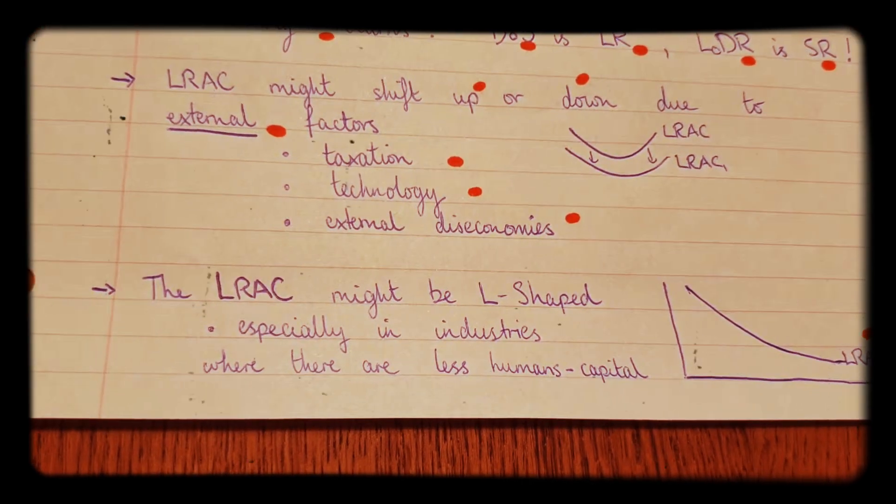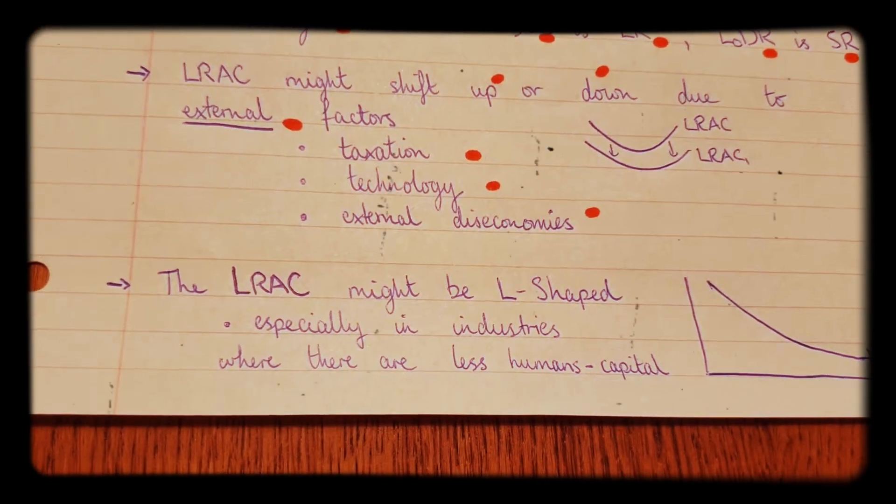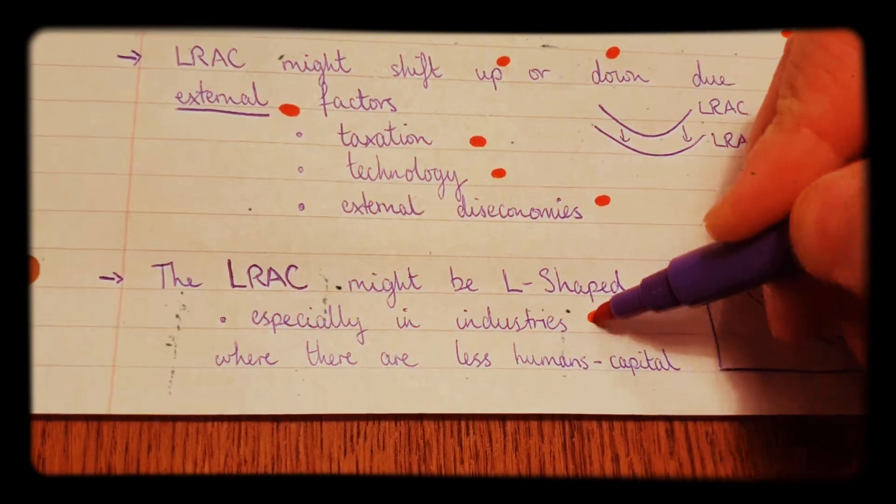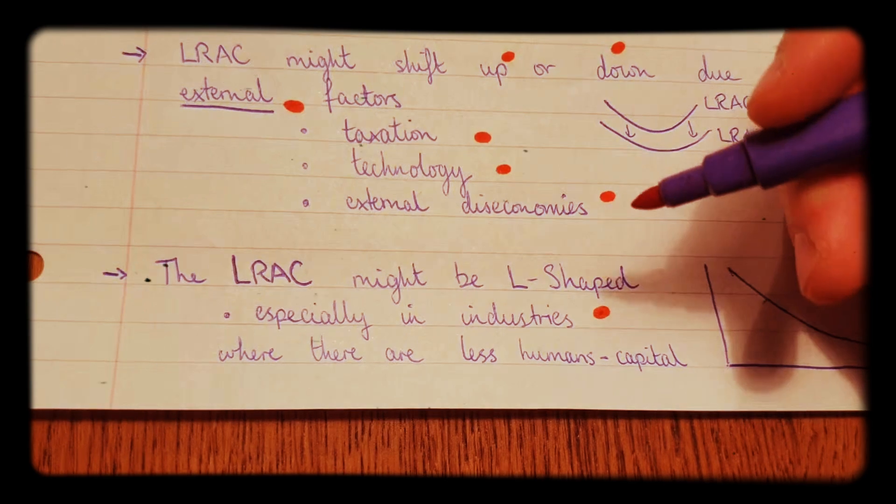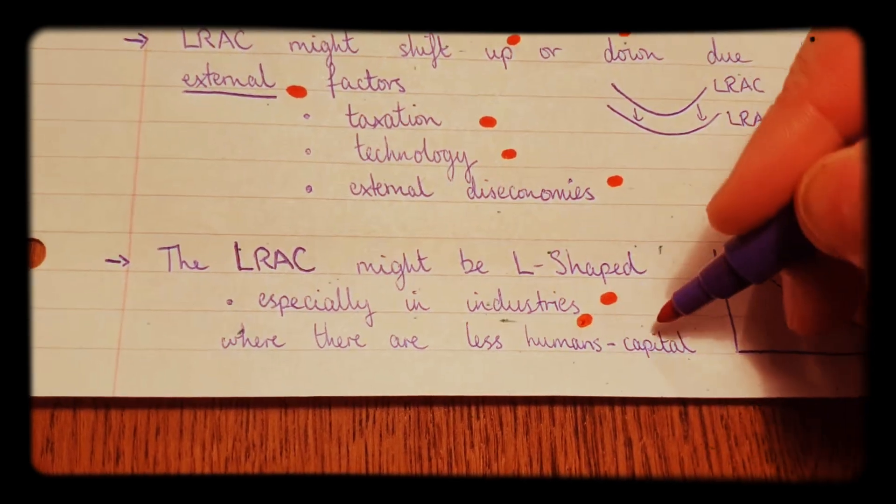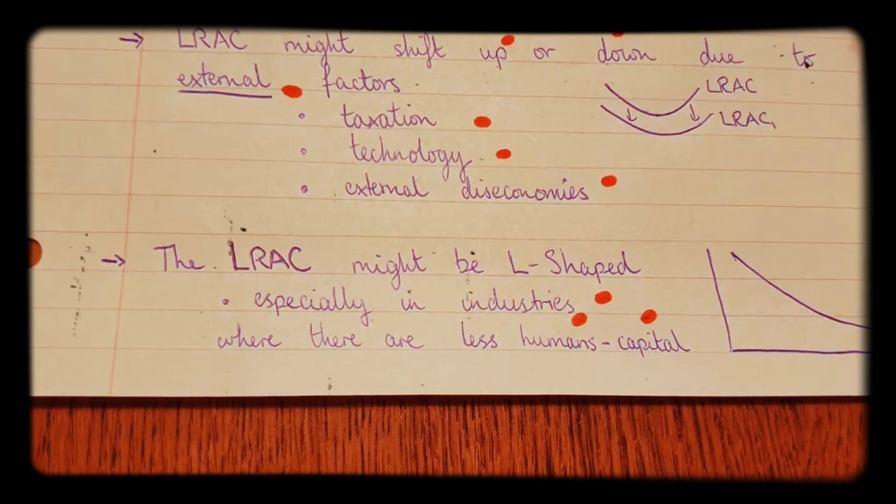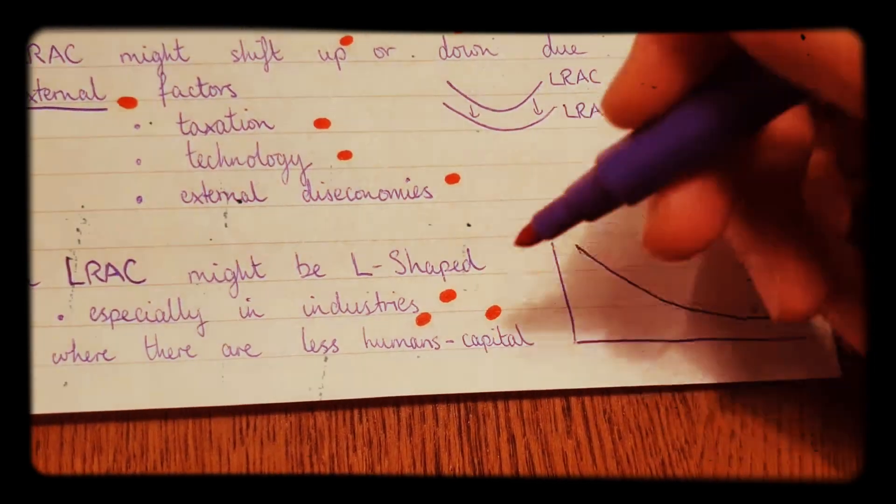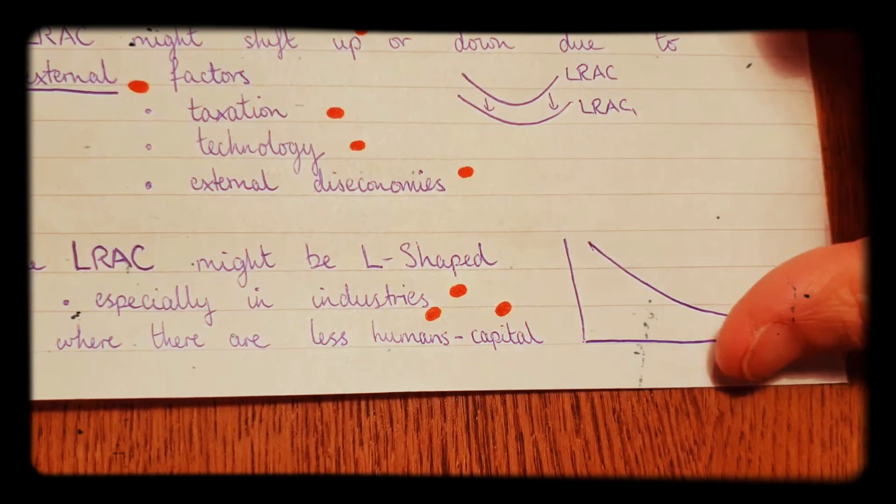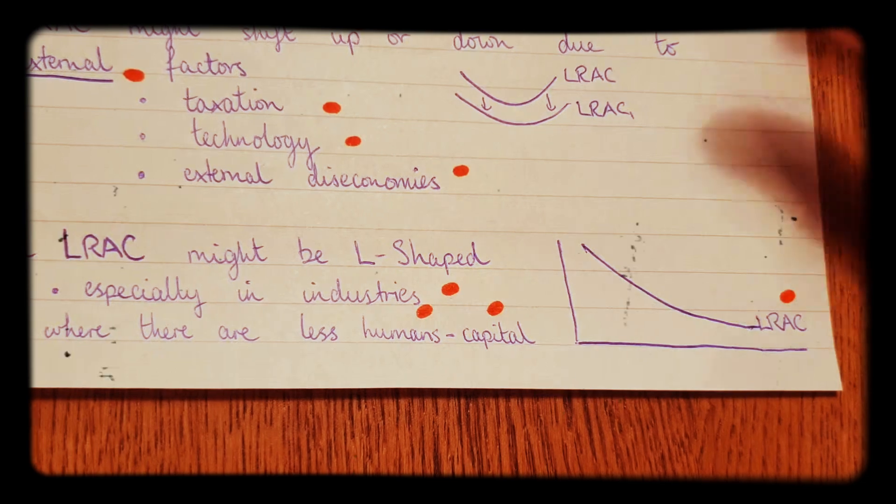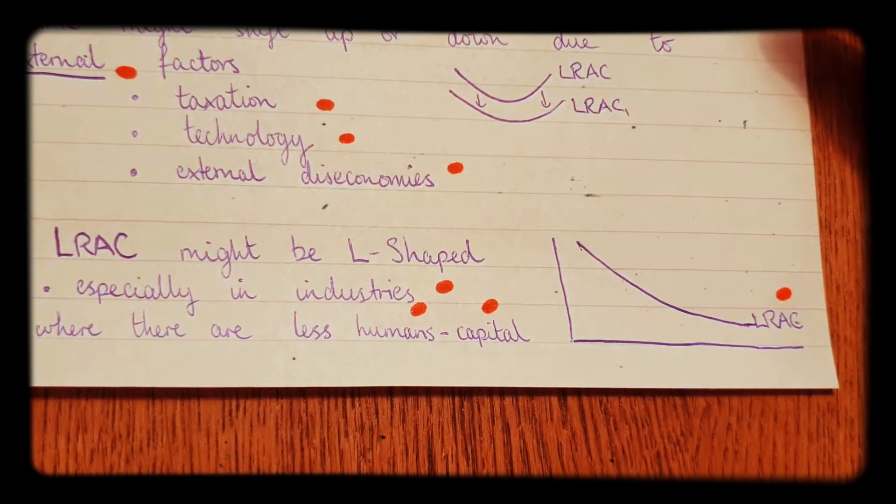Now, this curve is something that you might be asked to draw or know about. And this curve is especially in industries where there are less humans in relation to capital machinery. Because what happens is, is that human beings, when there's a lot of human beings in the business, there can be various inefficiencies in the business.